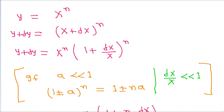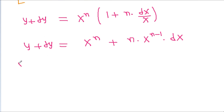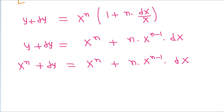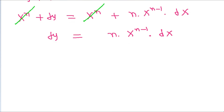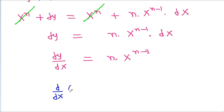The x to the power n terms on both sides cancel, leaving dy equal to n times x to the power n minus 1 times dx. Since y equals x to the power n, dividing both sides by dx gives d by dx of x to the power n equal to n times x to the power n minus 1, which is the required proof.